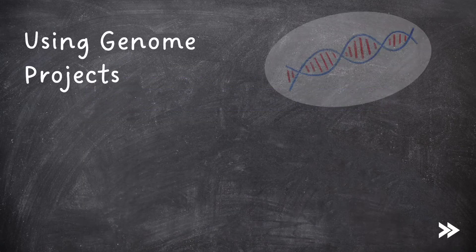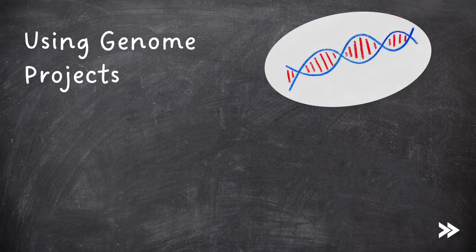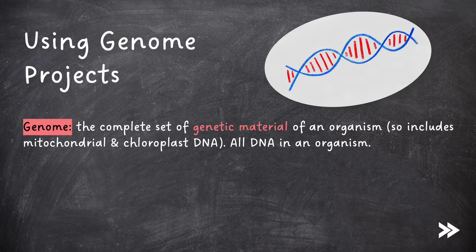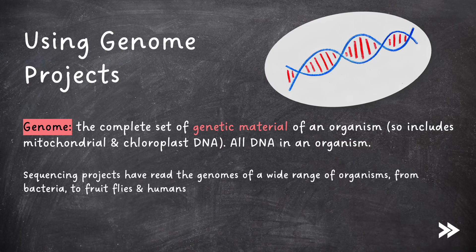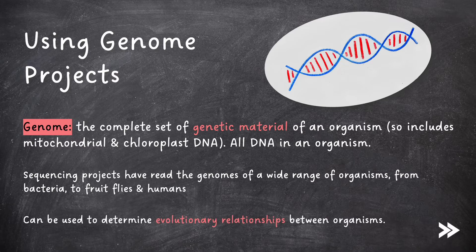So let's make a start. The genome is the complete set of genetic material of an organism, so it includes mitochondrial and chloroplast DNA — it is all the DNA in an organism. Sequencing projects have read the genomes of a wide range of organisms, ranging from bacteria to fruit flies and humans. They can be used to determine evolutionary relationships between organisms.